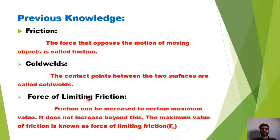Force of limiting friction: Friction can be increased to a certain maximum value. It does not increase beyond this. The maximum value of friction is known as force of limiting friction. اس friction کی ایک certain maximum value ہوتی ہے، اس maximum value سے وہ value increase نہیں ہو سکتی۔ تو وہ جو friction کی maximum value ہوتی ہے اس کو نام دیتے ہیں Force of limiting friction کا، جسے ہم fs سے represent کرتے ہیں۔